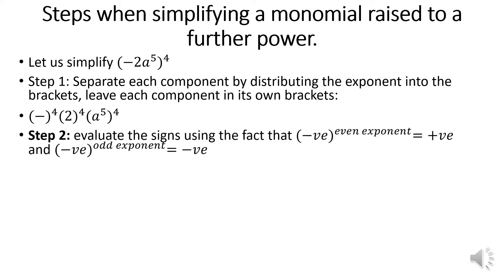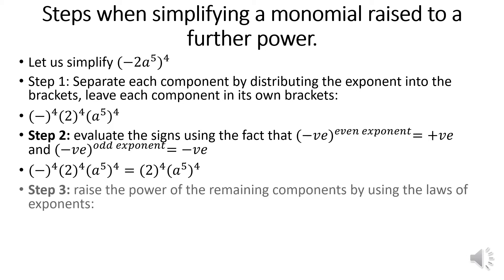Step number 2 is that we evaluate the signs using the fact that if we have a negative sign raised to an even exponent, that will equal a positive. And if a negative sign is raised to an odd exponent, the result remains negative. In our case, we have the negative raised to the power of 4, which becomes positive.